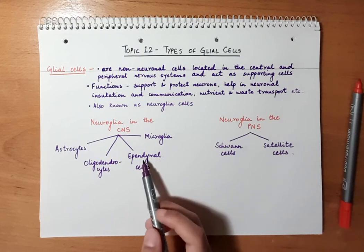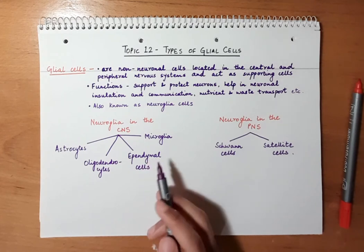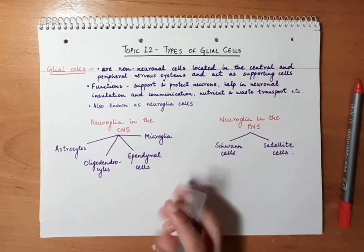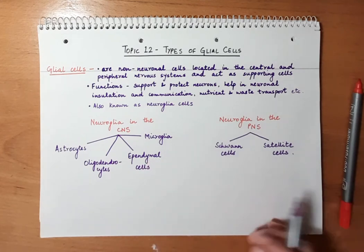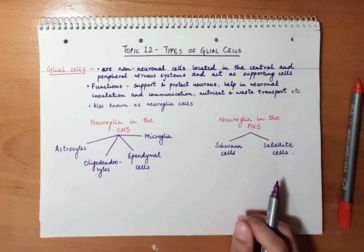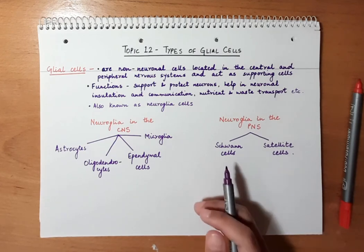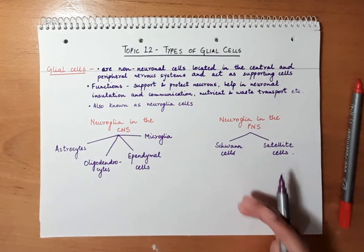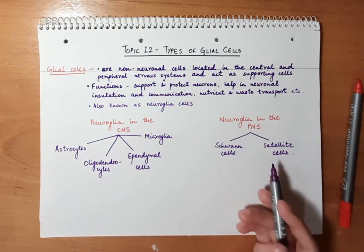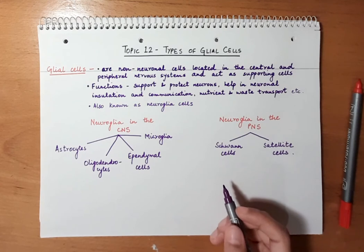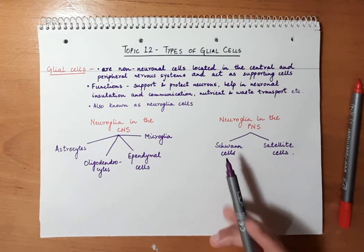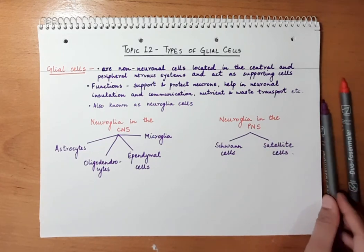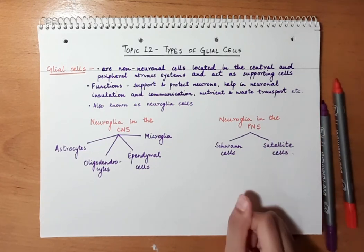So those are the two types of glial cells in the peripheral nervous system and the four types in the central nervous system. In the next videos we will discuss the functions of these different types of glial cells in the central and peripheral nervous systems in much more depth. Thank you very much for watching — see you next time.